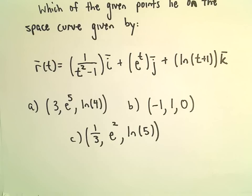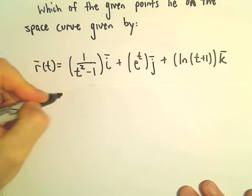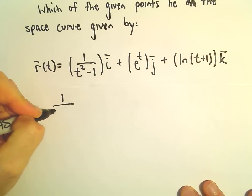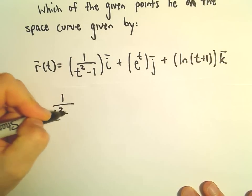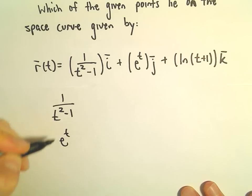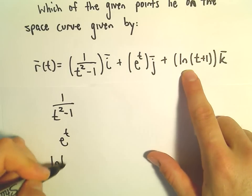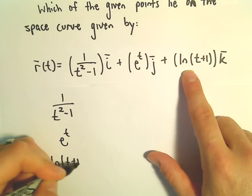To figure this out, all we have to do is look at the 1 over t squared minus 1, the e to the t, and the natural logarithm of t plus 1.